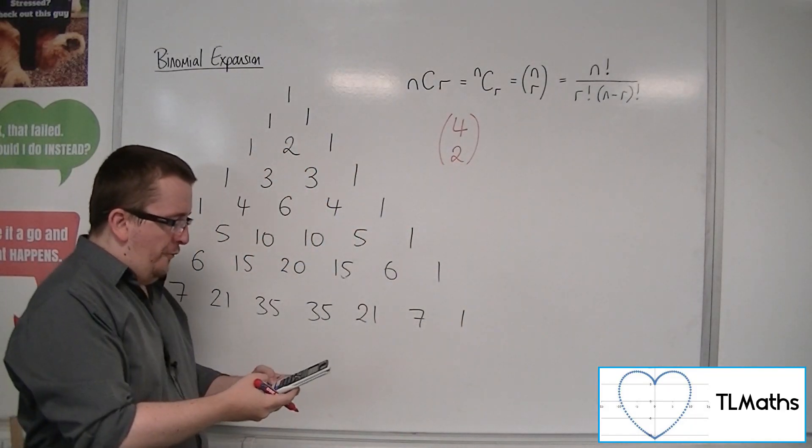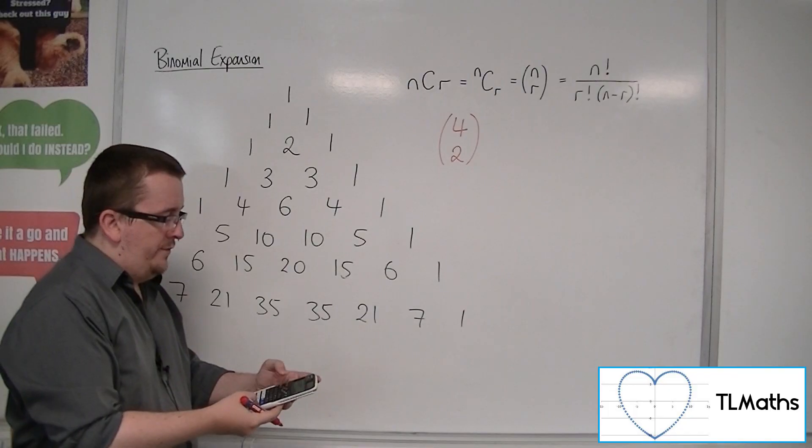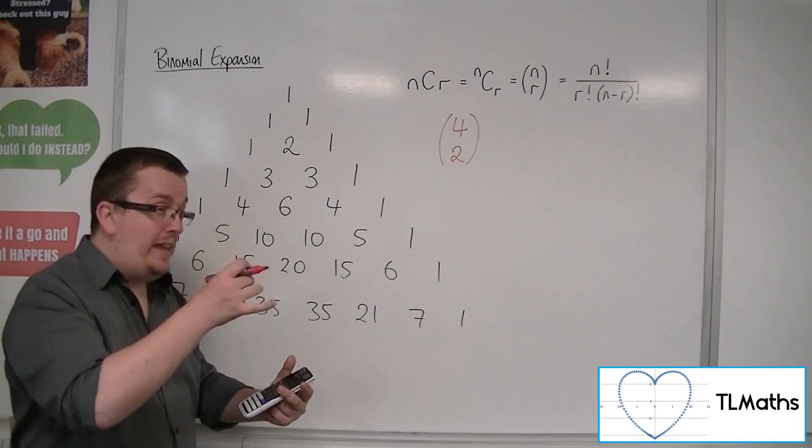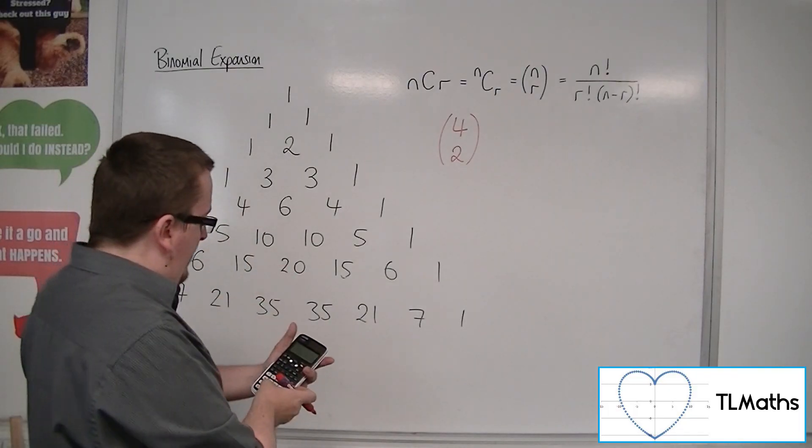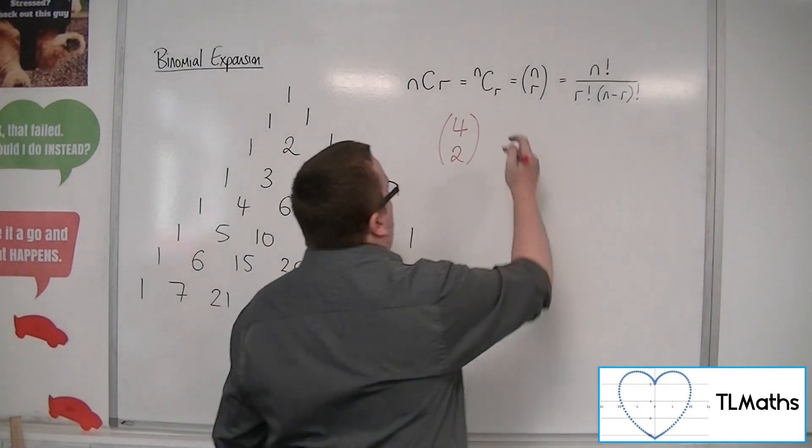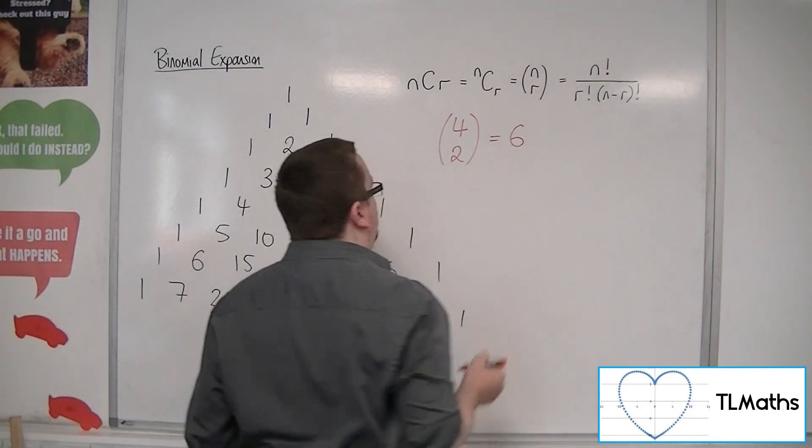You would type in 4, then shift and the division symbol, which brings up NCR in your display, then 2. You get 6.